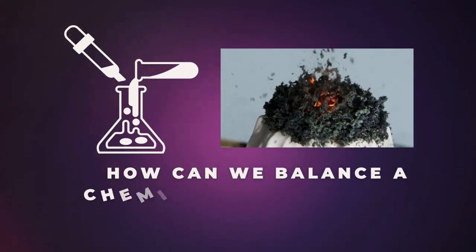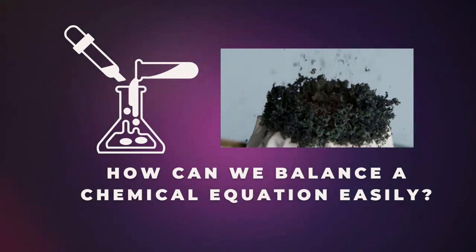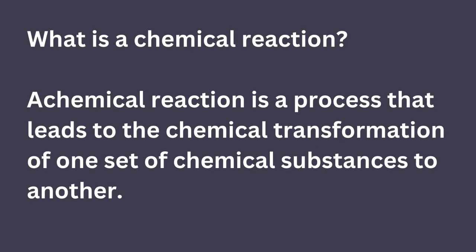How can we balance a chemical equation easily? What is a chemical reaction? A chemical reaction is a process that leads to the chemical transformation of one set of chemical substances to another.